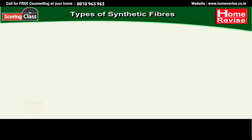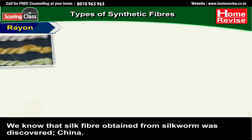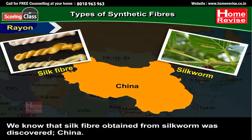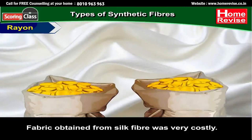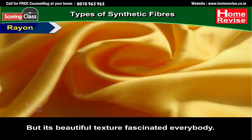Types of synthetic fibres: Rayon. We know that silk fibre, obtained from silkworm, was discovered in China. Fabric obtained from silk fibre was very costly, but its beautiful texture fascinated everybody.